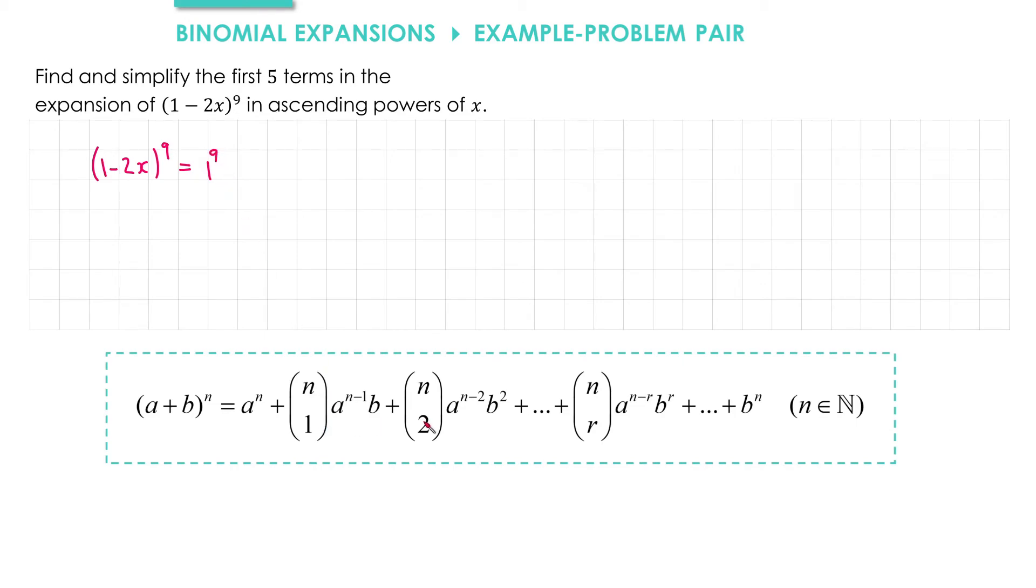Then we need to write in our binomial coefficients. So the power is 9. So we get 9 choose 1, 9 choose 2, 9 choose 3, and 9 choose 4.